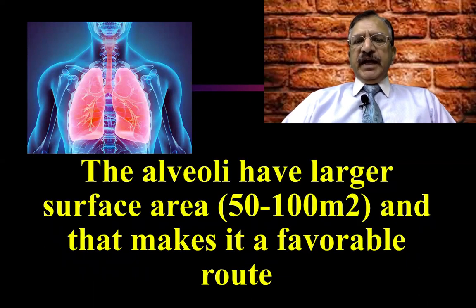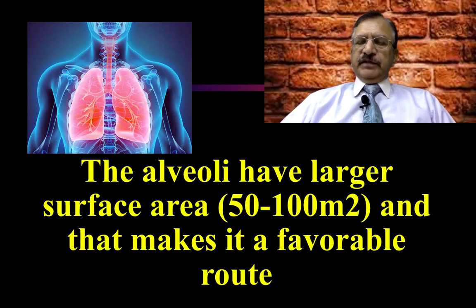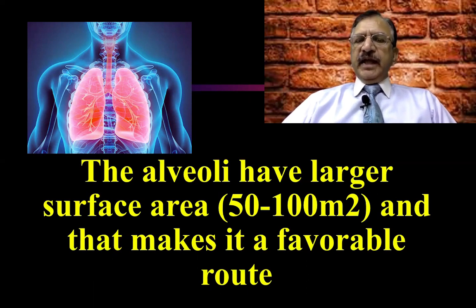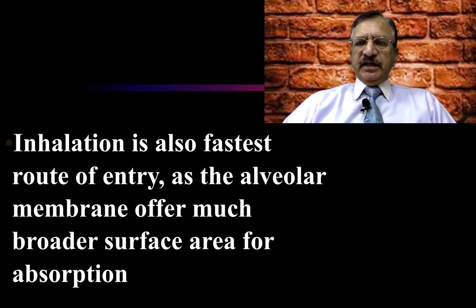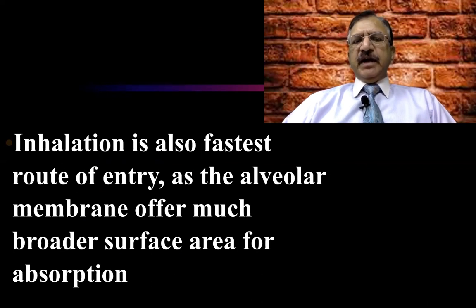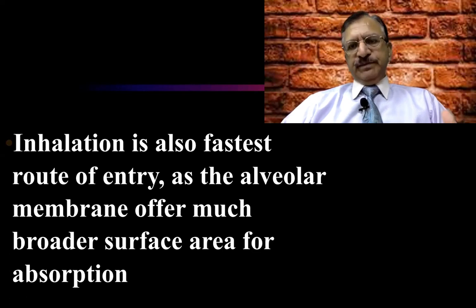The alveoli have a large surface area — for example, 50 to 100 square meters. That makes it a favorable route of absorption. Inhalation is also considered another fast route, as the alveolar membrane offers a much broader surface for absorption.